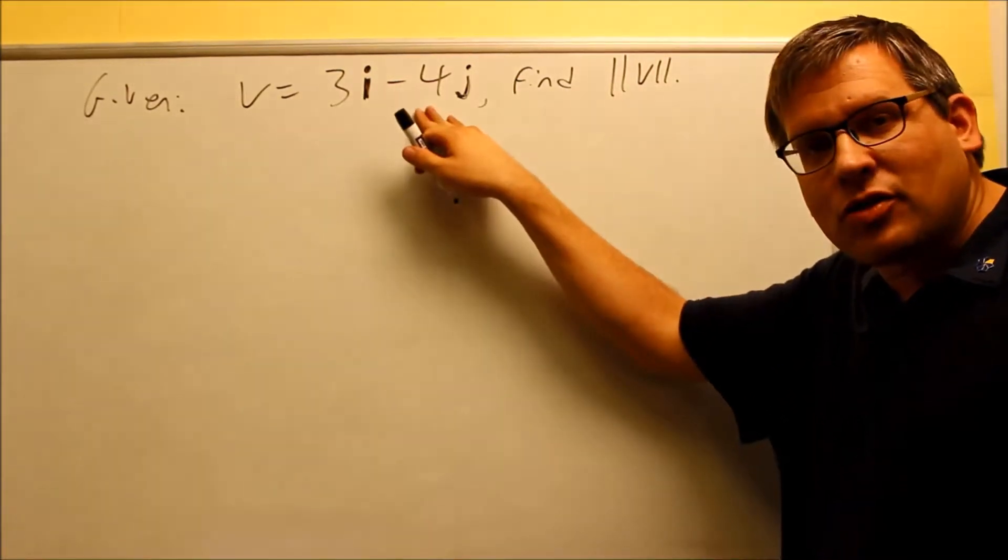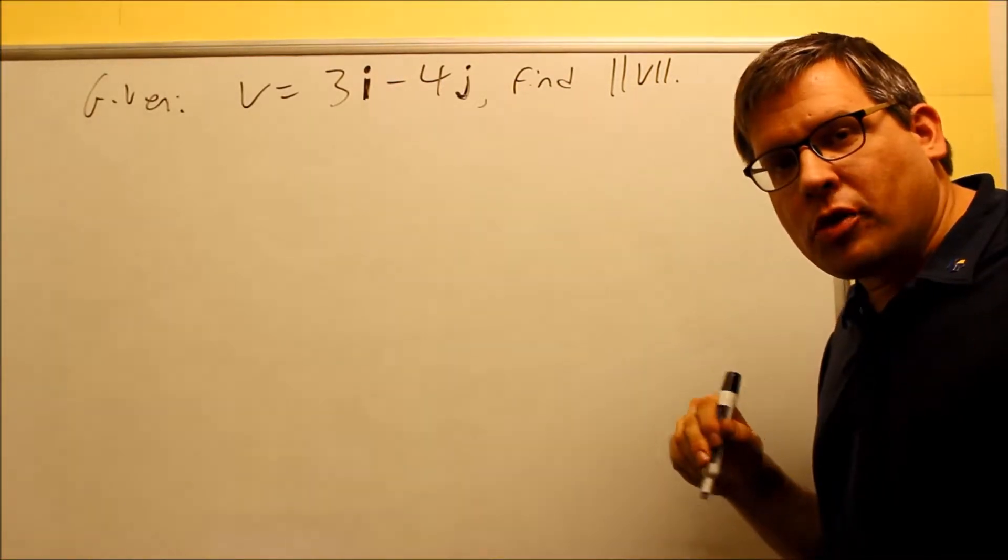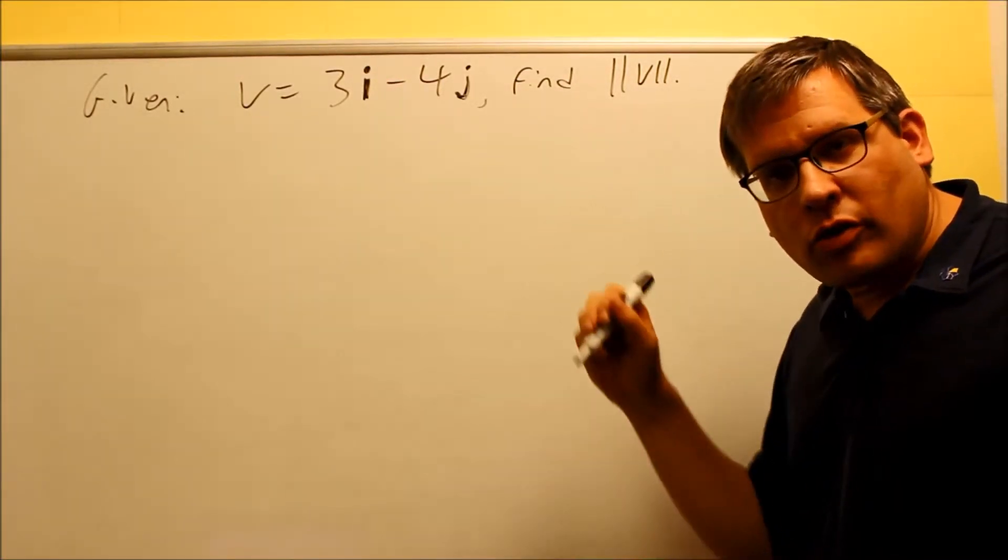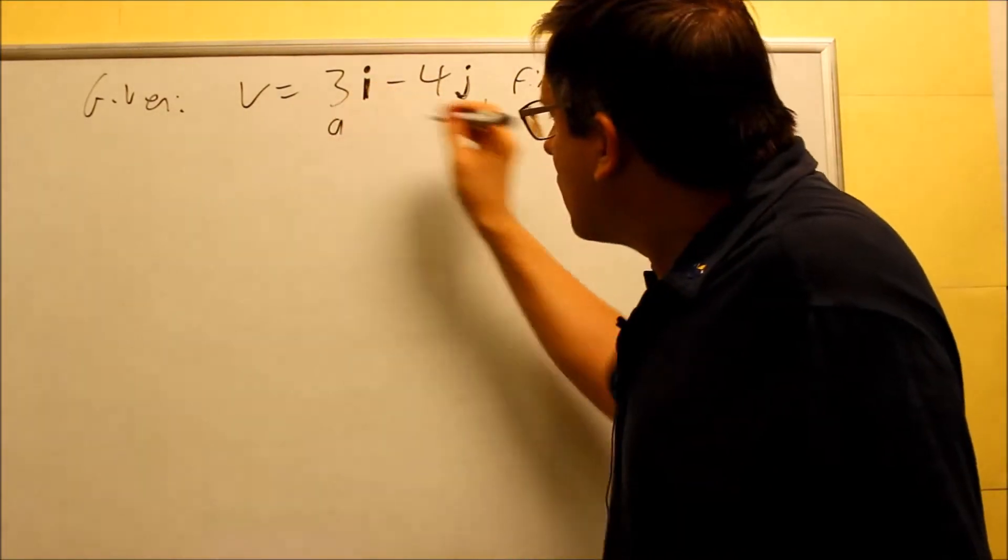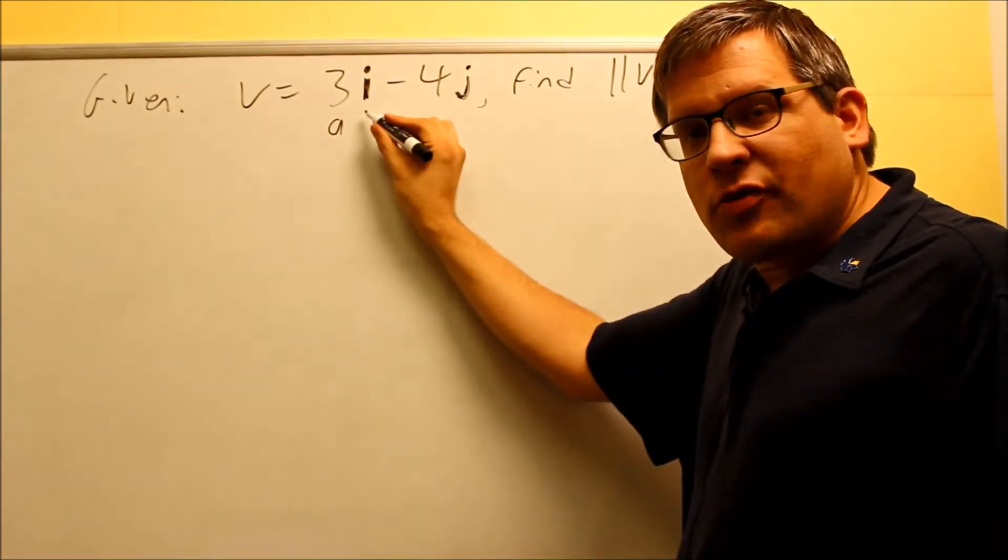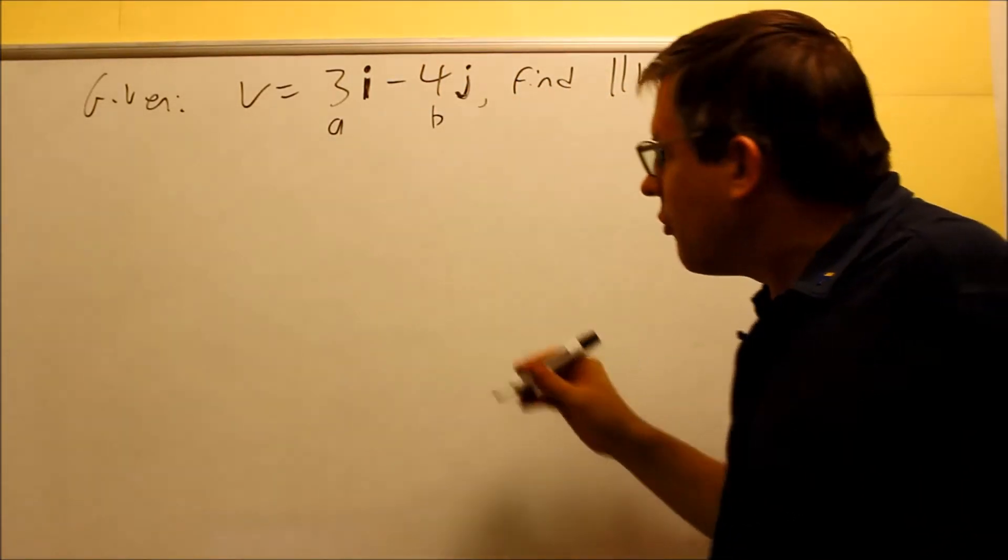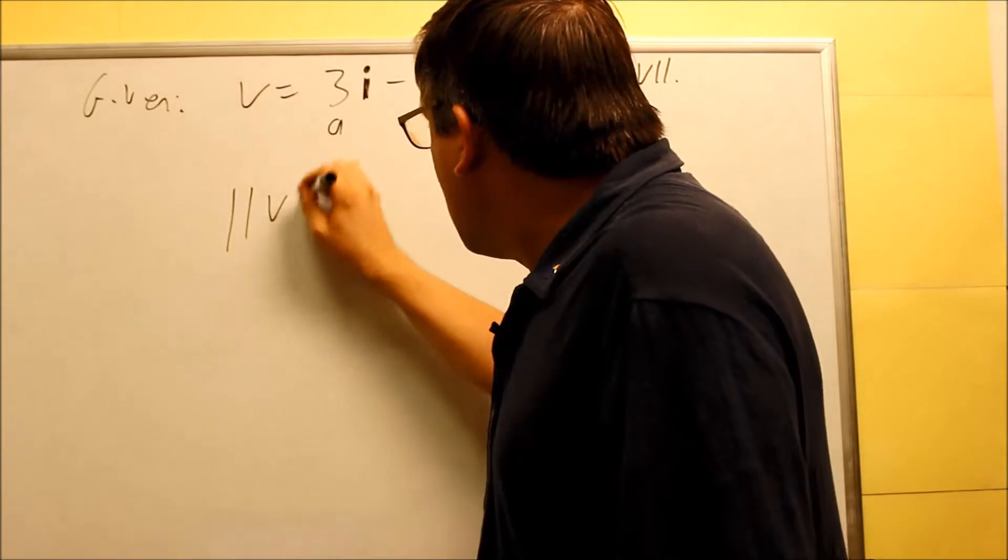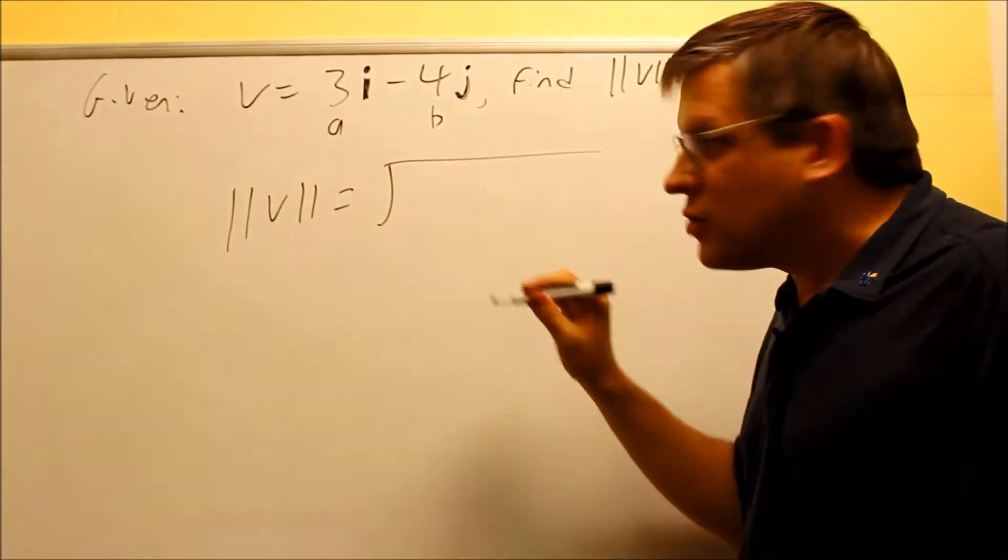V equals 3I minus 4J. We want to find the magnitude of V. Just gave you the formula for that. The formula involves the square root of A² plus B². In this case, the A is always the number that comes in front of the I. B comes in front of the J. So if you want to find the magnitude of V, all we're going to do is put it into the formula. The square root of A² plus B², 3².